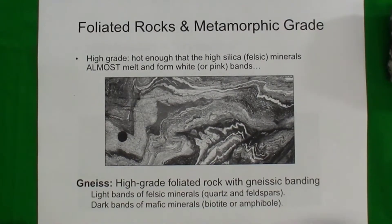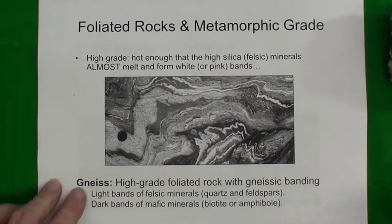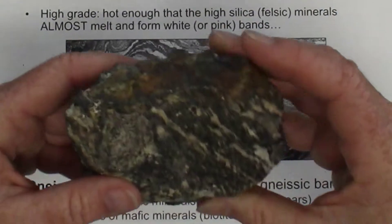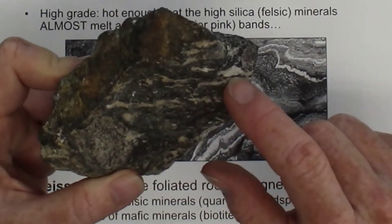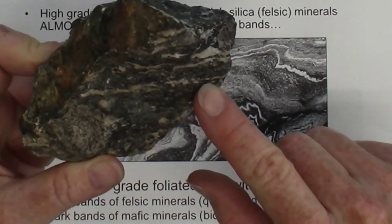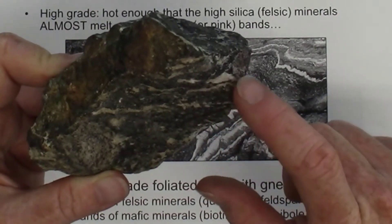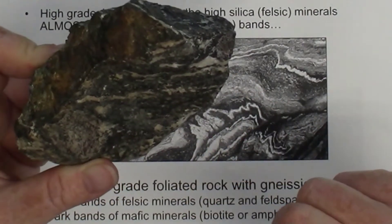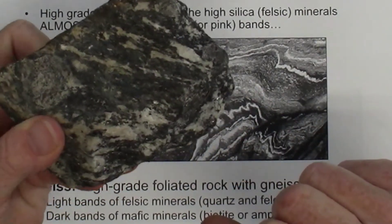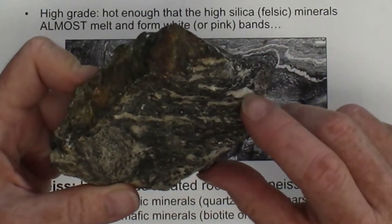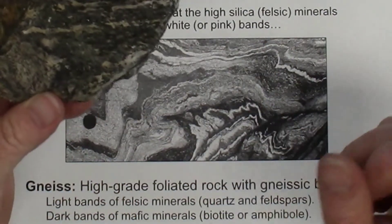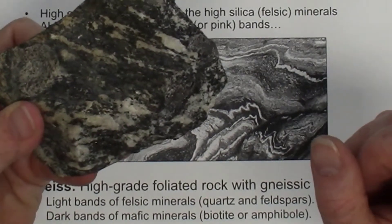Under even higher temperatures, higher pressure, and directed stress at convergent boundaries, a high grade metamorphic rock called gneiss can form. Gneiss is very distinctive because it has very obvious banding — this is a type of foliation where the felsic minerals and mafic minerals have segregated and become stretched in lines parallel to each other, giving a striped appearance. It can show white and black banding or pink and black banding, depending on the felsic minerals present.